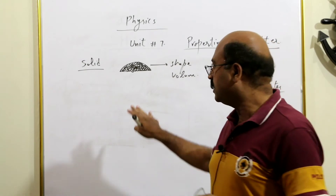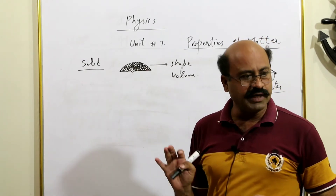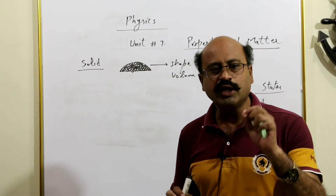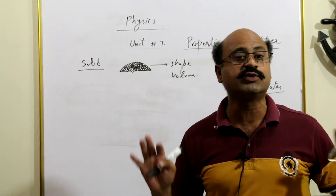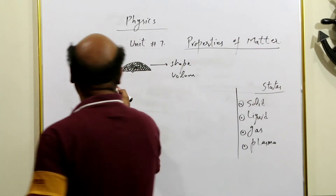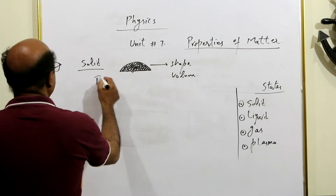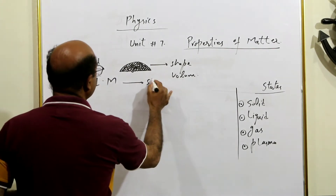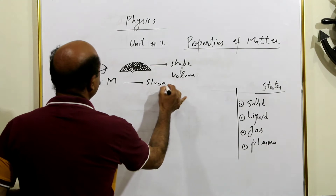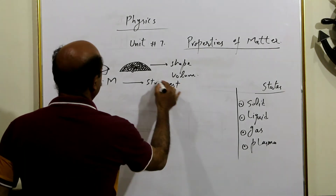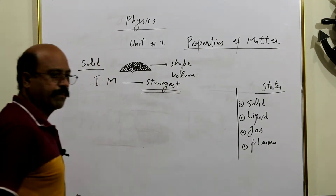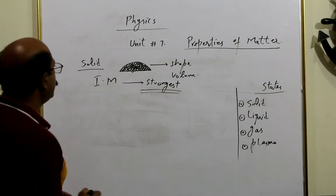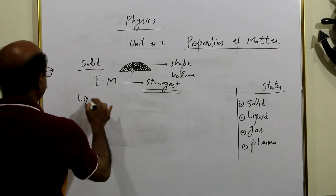Yani woh state jis ki khaas shakl hai aur khaas volume hai — use hum naam denge solid state of matter. Solid mein intermolecular forces strongest hoti hain. Agar hum kahein ke is mein intermolecular forces ki strength kya hai, toh use main strongest ki category dunga. Doosre number mein hum aate hain liquid state of matter pe.